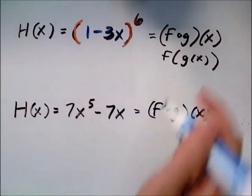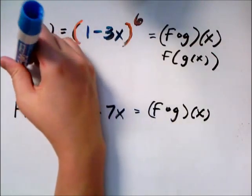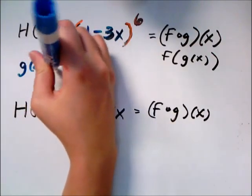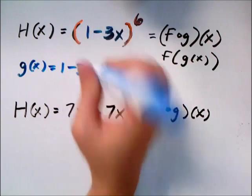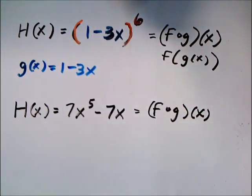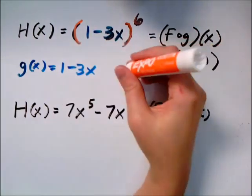So then which one would be which? Well, g was the plugged in part. So that means g of x could be 1 minus 3x. And f of x would have to be something to the sixth. Because I plugged that in for something.